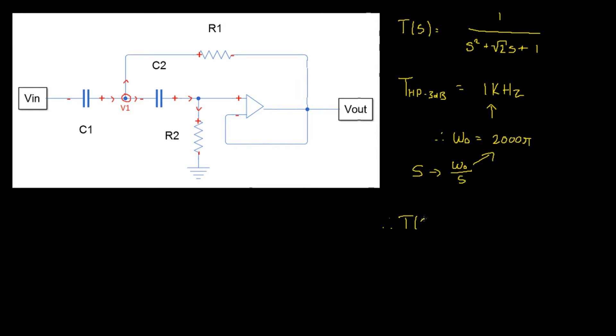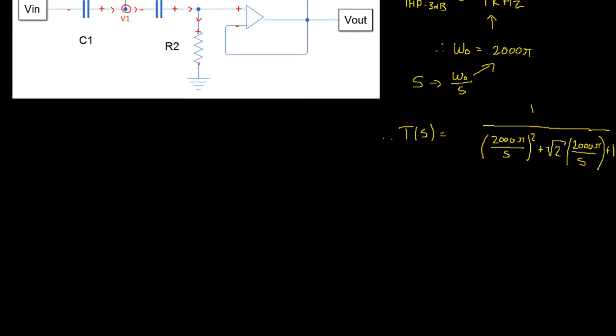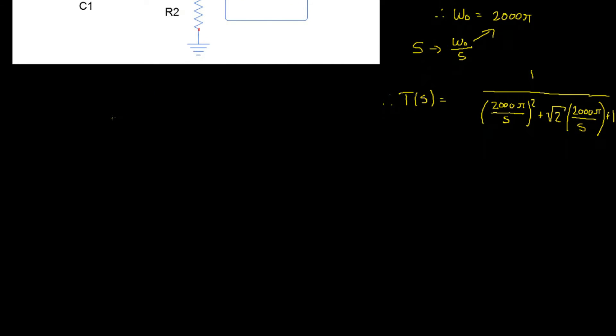Therefore, T(S) equals 1 divided by omega_0, which is 2000 pi, divided by S, all of that squared, plus square root of 2 times 2000 pi divided by S, plus 1. Okay, we want to get this into standard form, so that means we have to have a coefficient of 1 on our highest degree S term. So what should we do? Well, the first thing I would like to do is expand these brackets. So we have 1 divided by 2000 pi squared, divided by S squared, plus square root of 2 times 2000 pi divided by S, plus 1.